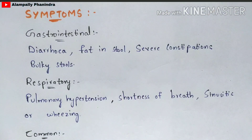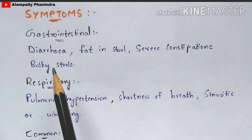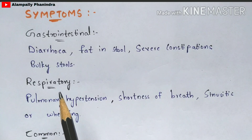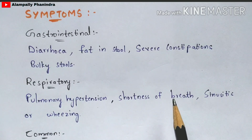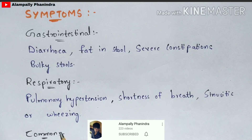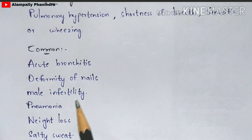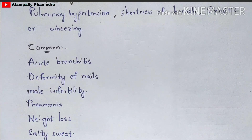The symptoms of cystic fibrosis in the gastrointestinal region include diarrhea, fat in stools, severe constipation, and bulky stools. In the respiratory region, symptoms include pulmonary hypertension, shortness of breath, sinusitis, and wheezing. Common symptoms also include acute bronchitis, deformity of nails, male infertility, pneumonia, weight loss, and salty sweat.